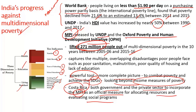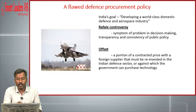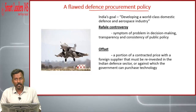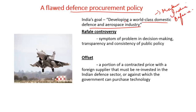The next article is about India's flawed defense procurement policy. The Government of India through many initiatives has aimed at developing a world-class domestic defense and aerospace industry, enhanced by the Make in India defense program. India has the third largest military in the world, and as far as defense expenditure is concerned, India is the sixth largest spender.